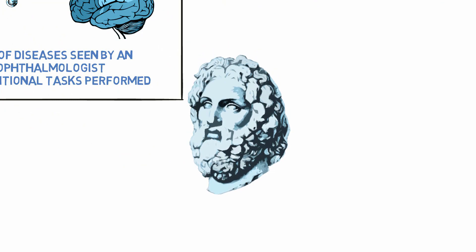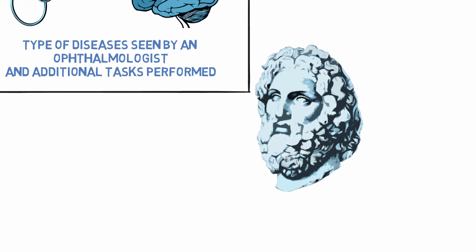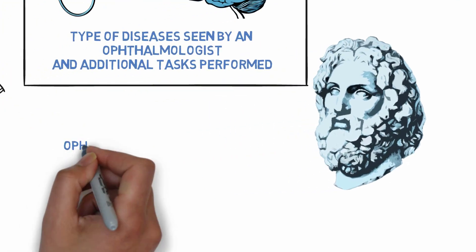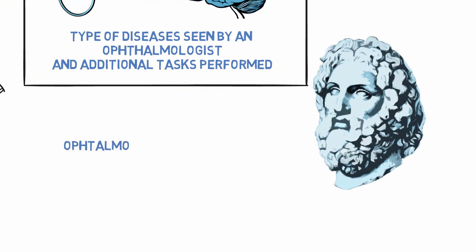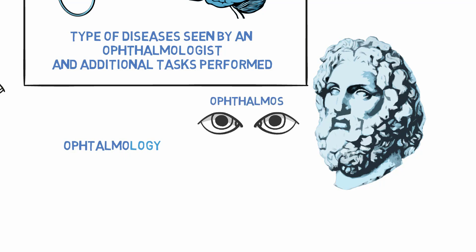Like most words in medicine, the word ophthalmology has Greek roots: ophthalmo and logy — ophthalmos meaning eyes, and logia meaning study.